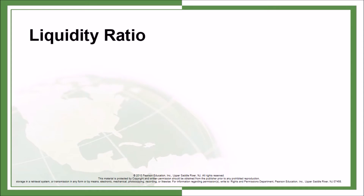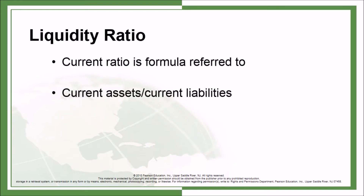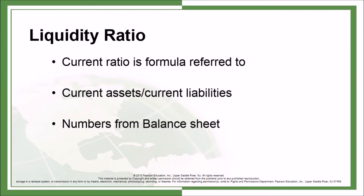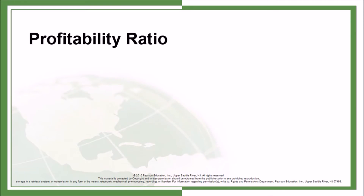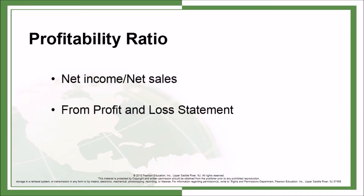Liquidity ratio: current ratio formula is current assets divided by current liabilities, using numbers from the balance sheet. Also the acid test ratio. Profitability ratio: net income divided by net sales, from the profit and loss statement.